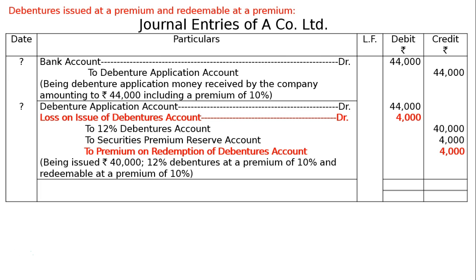The narration reads: being issued Rs. 40,000 of 12% debentures at a premium of 10% and redeemable at a premium of 10%. The total of both the debit and credit columns is Rs. 92,000, and this is the final answer.